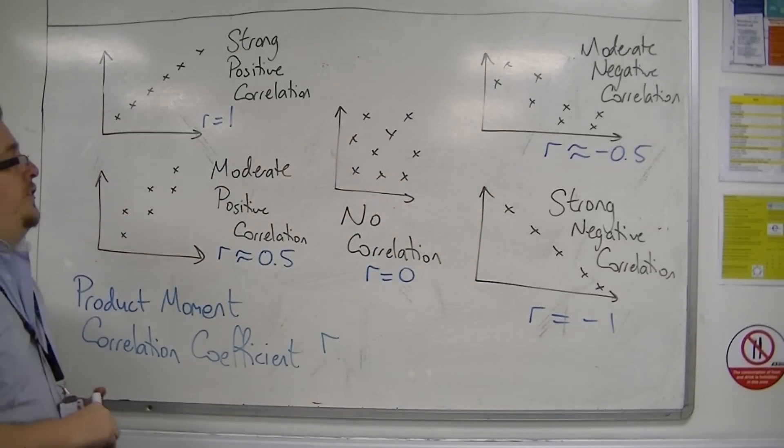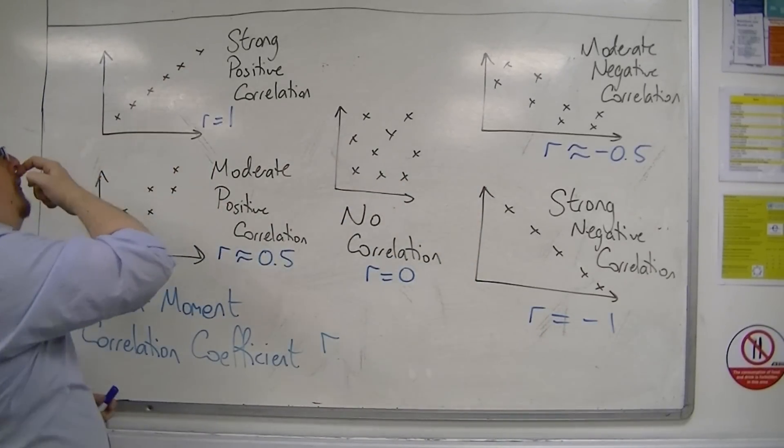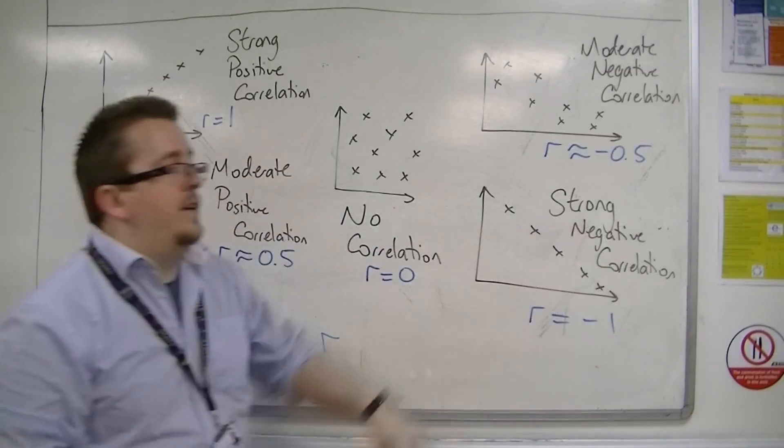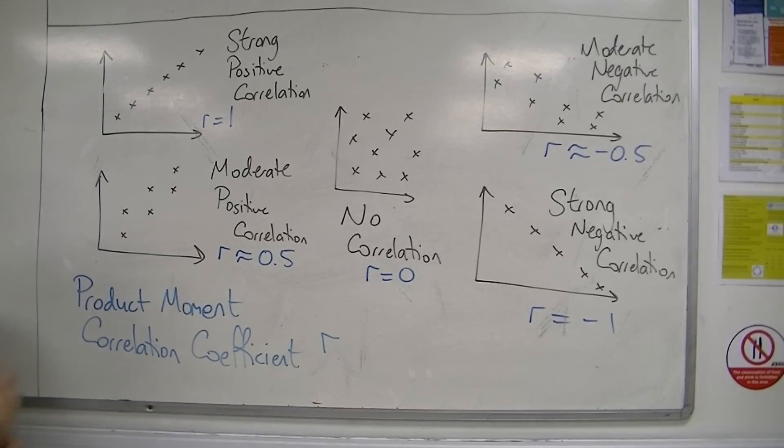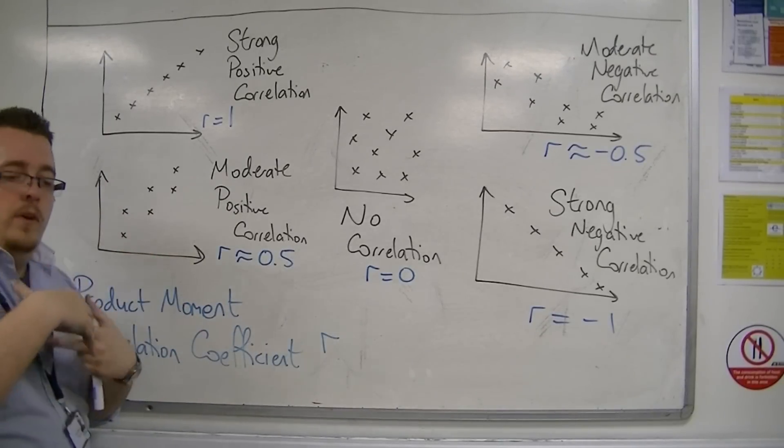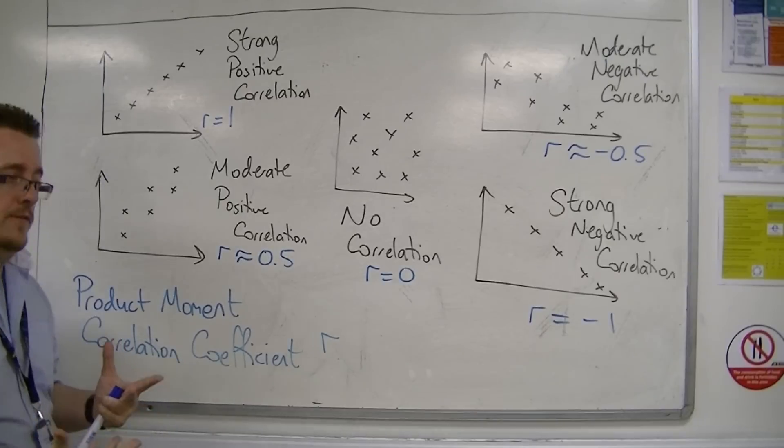So, when R is positive 1, you're at positive correlation, all the way through to minus 1, where you've got strong negative correlation. That's kind of how R is assessed.